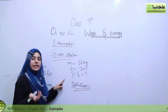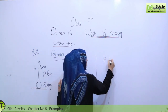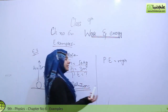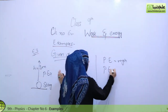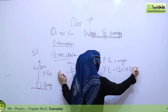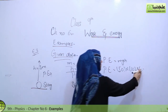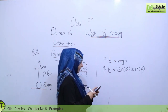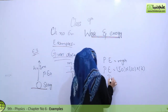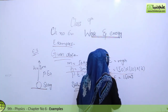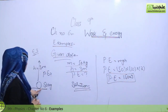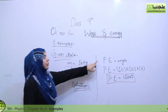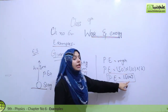In the solution, the formula for potential energy is PE equals mgh. Mass is given as 50 kg, height is 3 meters, and g is constant at 10 m/s². Putting all values in: PE equals 50 times 10 times 3. When we multiply all of these, we get potential energy equals 1500 joules.